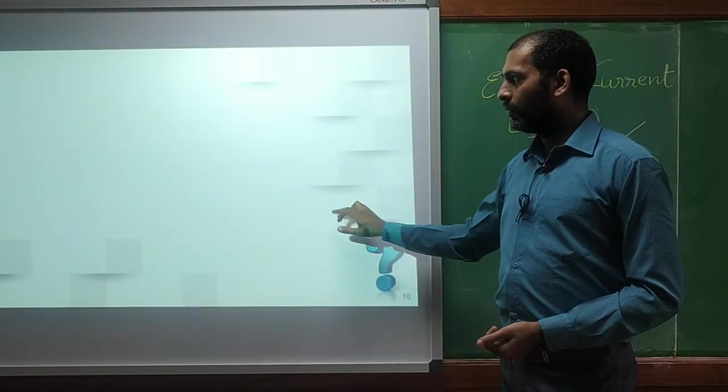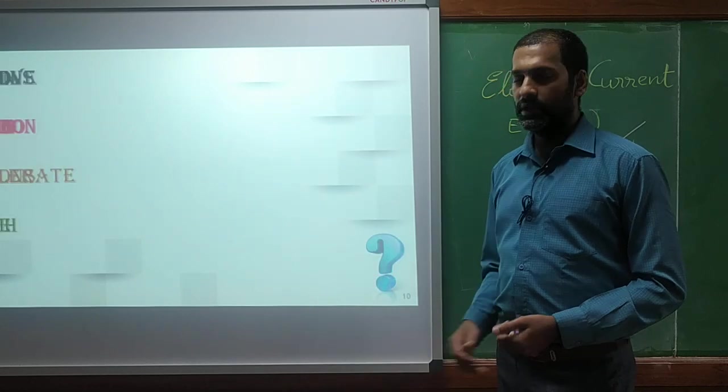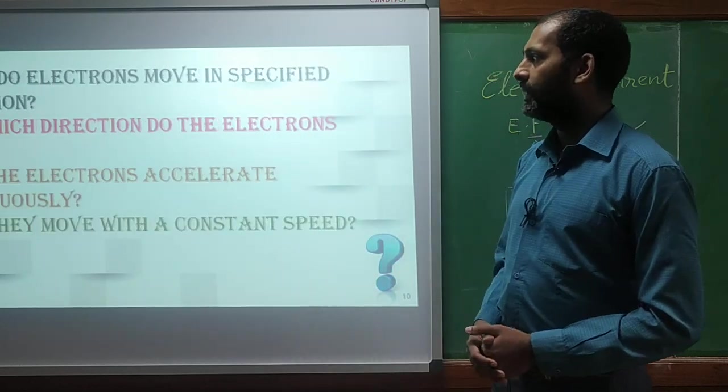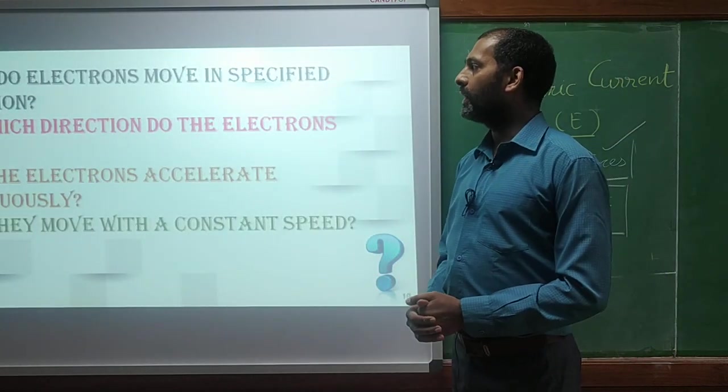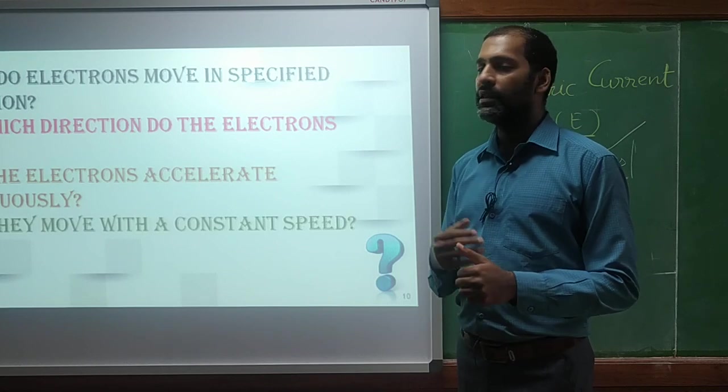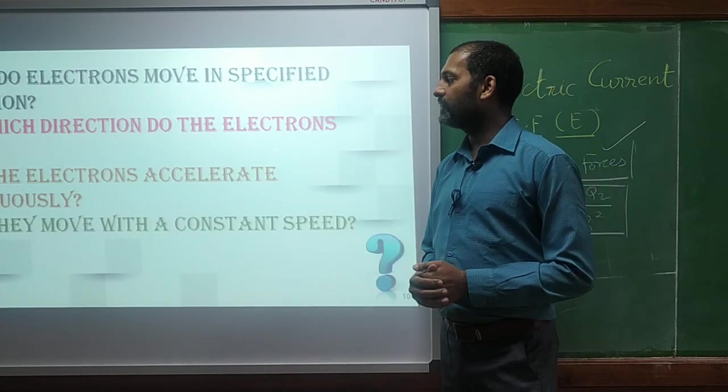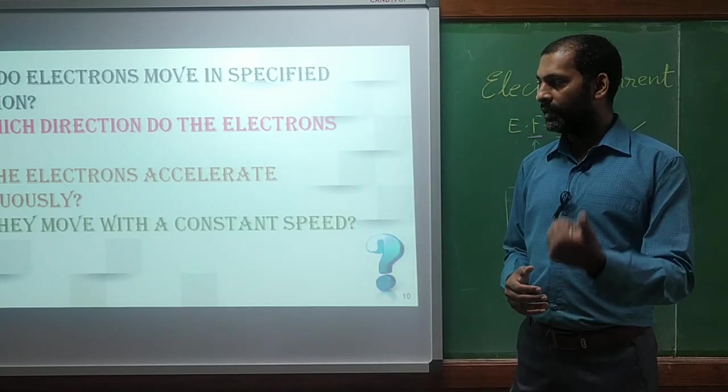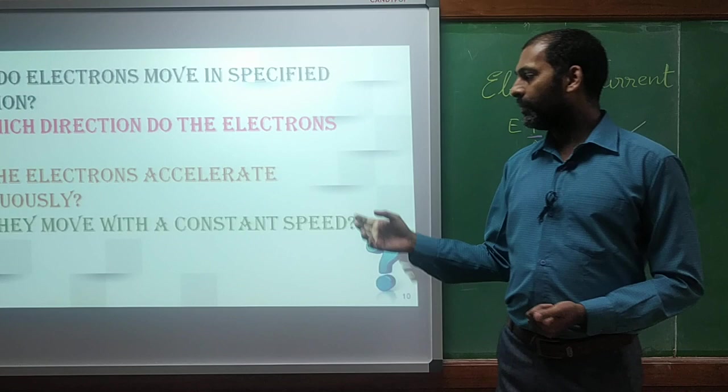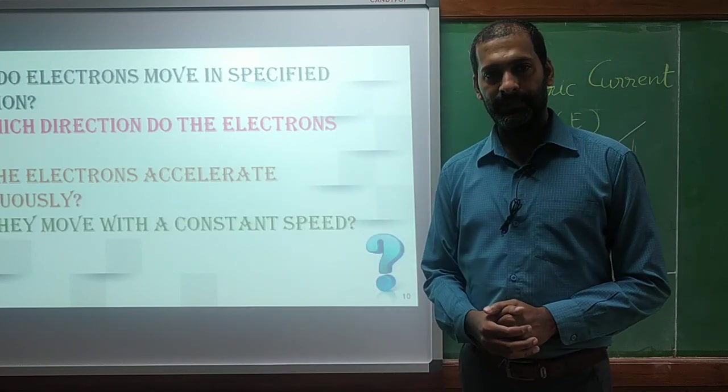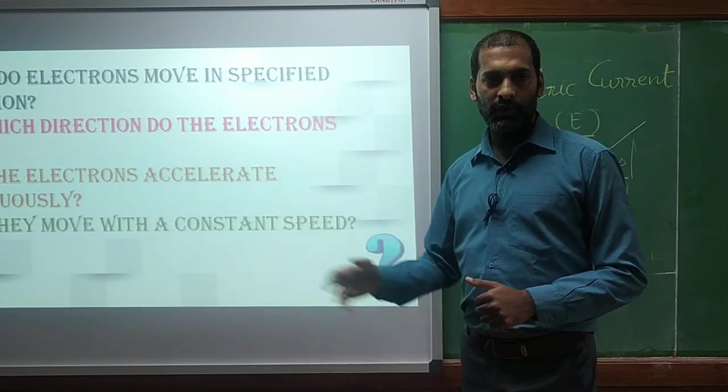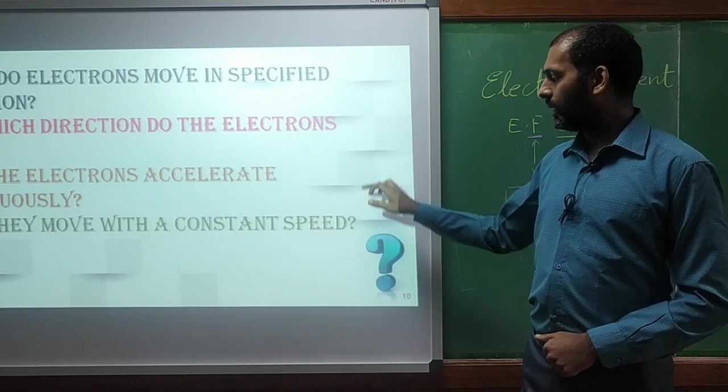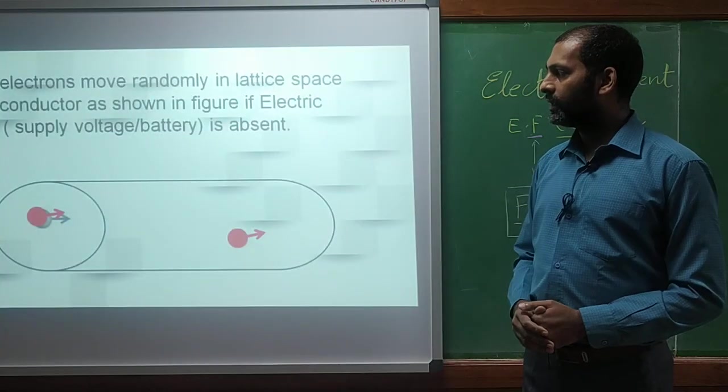So here we will pose few questions and we will try to find out the answers about electric current. First thing, why do electrons move in specified direction only? Then in which direction do the electrons move? Do the electrons accelerate continuously? Do they move with constant speed? So these are the things what we have to understand about the current.